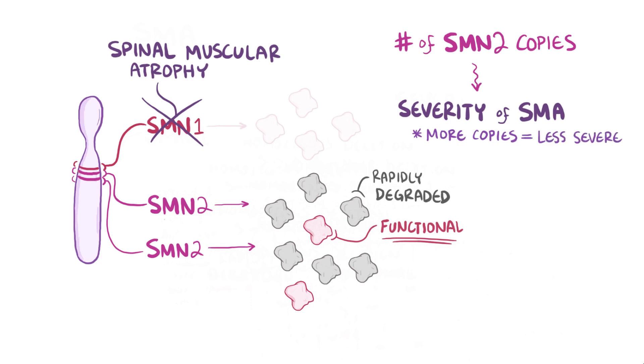So as an example, a patient with two SMN2 genes might have infantile SMA, whereas a patient with four SMN2 genes might have a milder subtype.